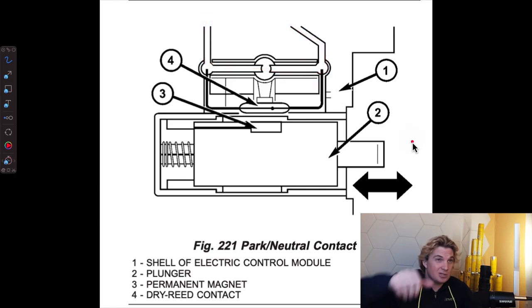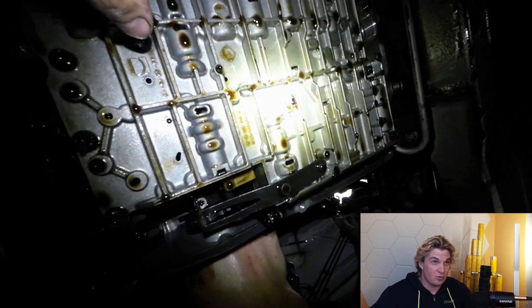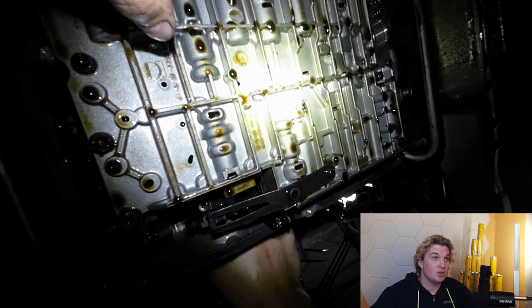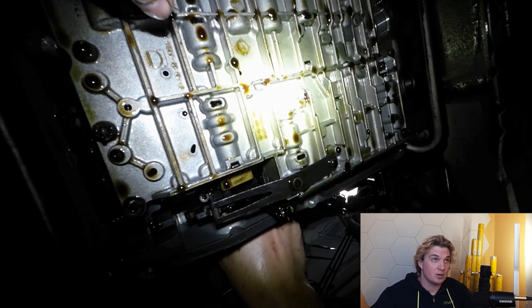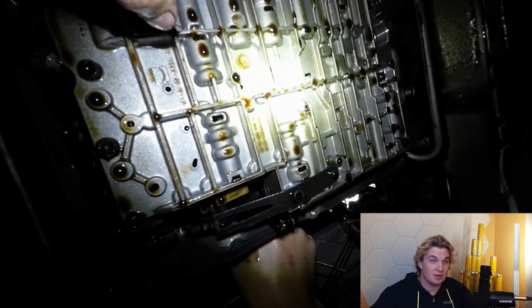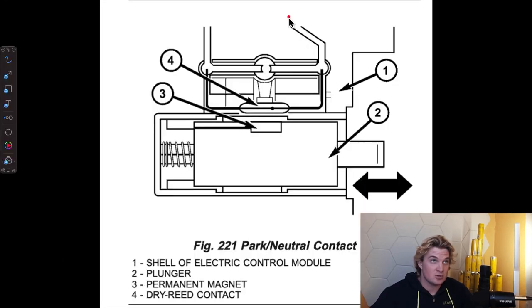The gear selector, when you switch gears, has a component that pushes against this button and suppresses it when you're in neutral. All other times, this button is out and the circuit is complete.